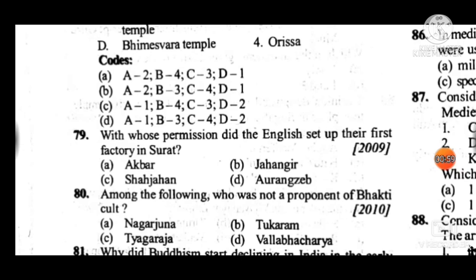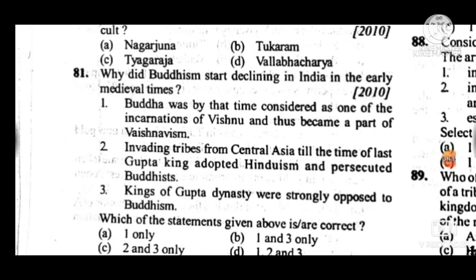Question 81: Why did Buddhism start declining in India in the early medieval times? Answer is A — only one statement is correct: Buddha was by that time considered as one of the incarnations of Vishnu and thus became a part of Vaishnavism. This was the main reason for the decline of Buddhism at the beginning of early medieval times.